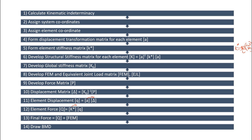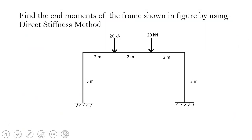What we obtain are the final moments at each joint, from which we can easily draw a bending moment diagram. Now let us go through an example. The question is: find the end moments of the frame shown in the figure using the direct stiffness method. The frame has members AB and CD of length 3 meters each, and BC of length 6 meters with two point loads acting on it.